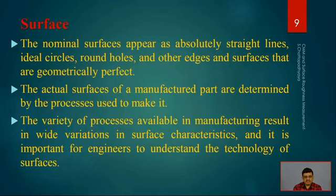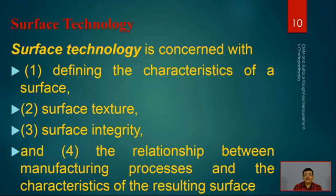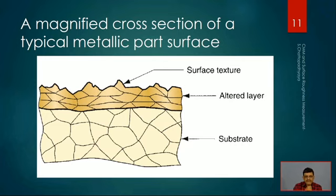The variety of processes available in manufacturing results in wide variations in surface characteristics. It is very important for engineers to understand the technology of surfaces — how surfaces can be generated — and the best manufacturing practices to follow. Surface technology is very much concerned with defining the characteristics of a surface: surface texture, surface integrity, and the relationship between the manufacturing process and the characteristics of the resulting surface. A magnified cross-section of a typical metallic part shows surface texture layers from machining and the substrate beneath.